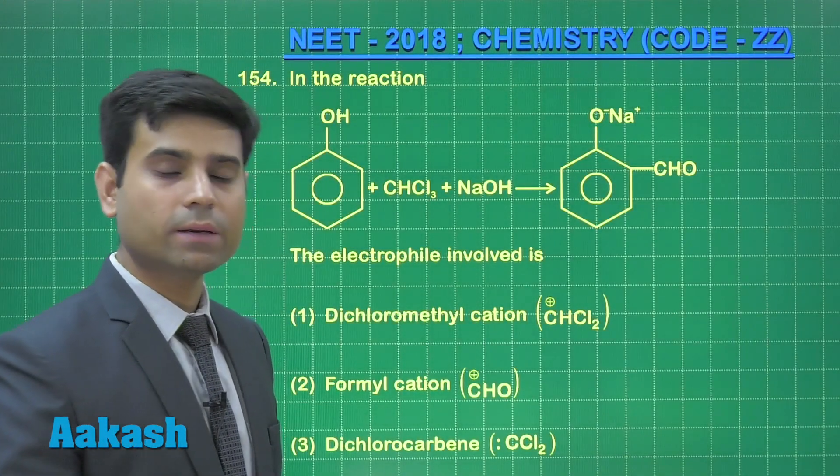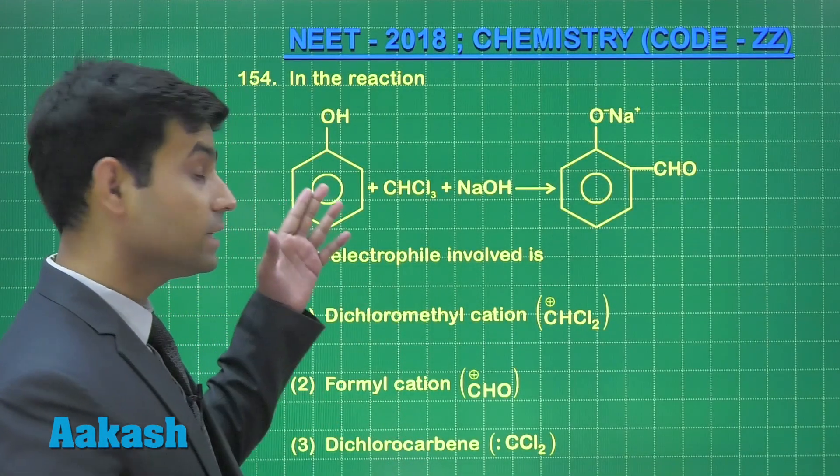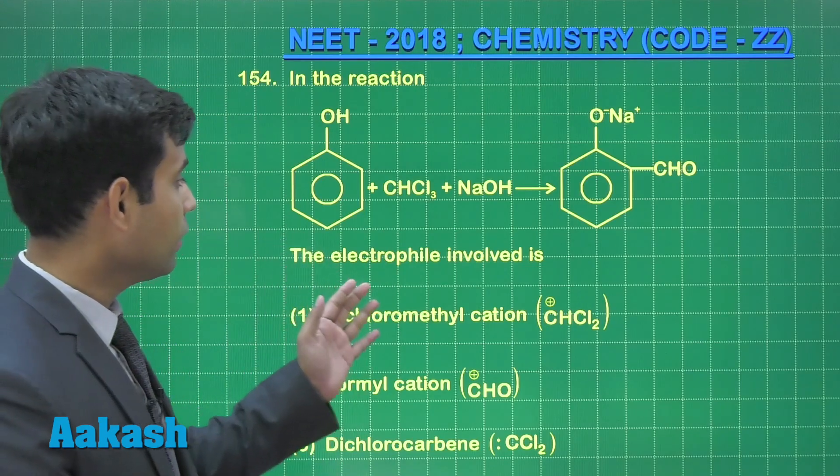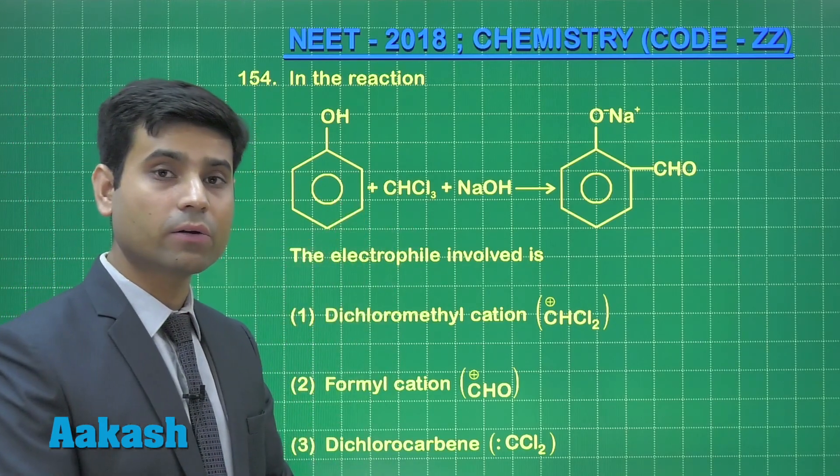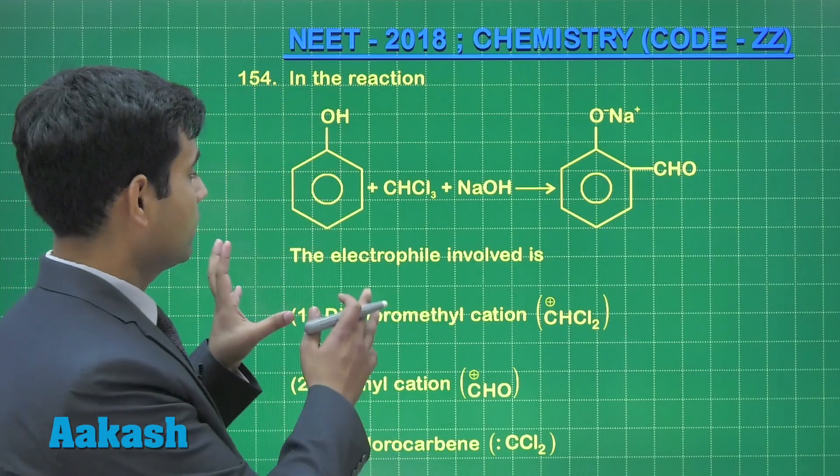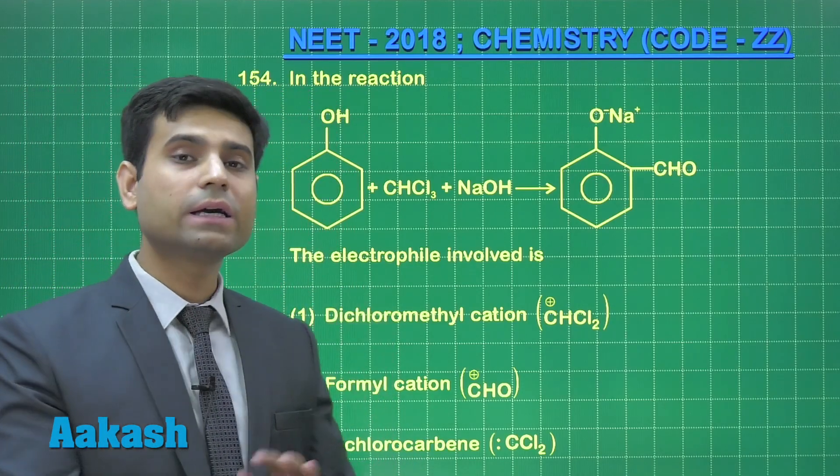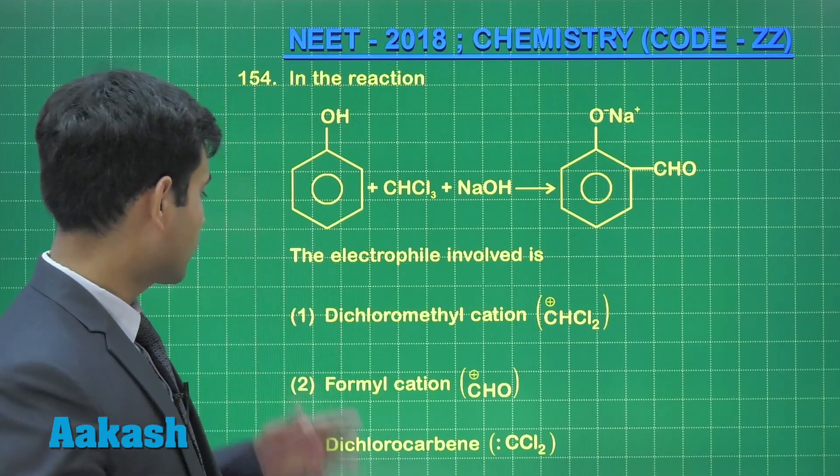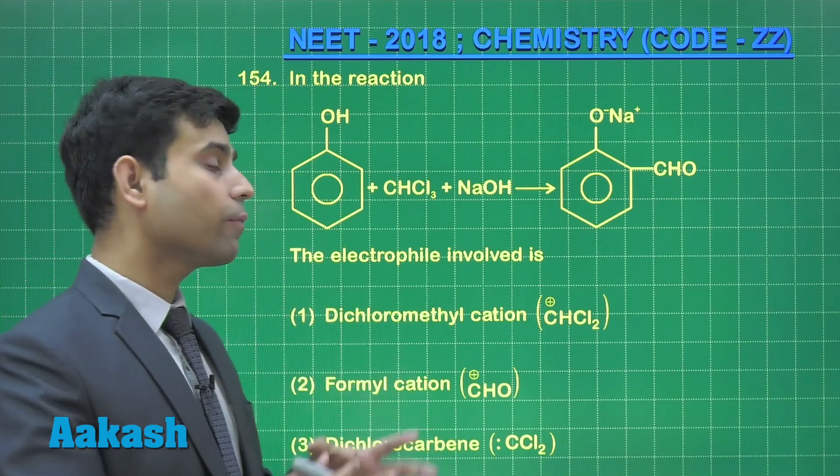The next question is question number 154, which says: in the reaction we have phenol which reacts with chloroform and sodium hydroxide. This gives us the product. Students, this reaction is Riemann Tiemann reaction. The question asks, the electrophile involved is...